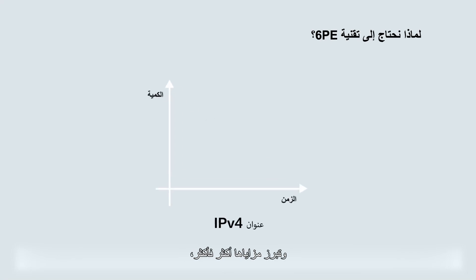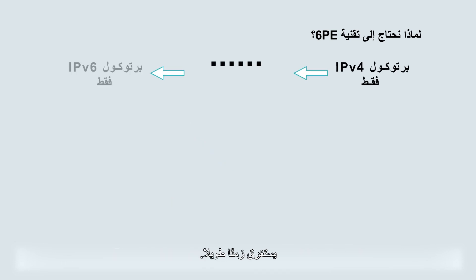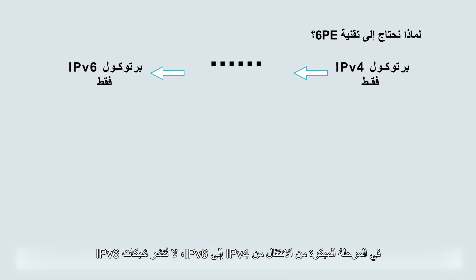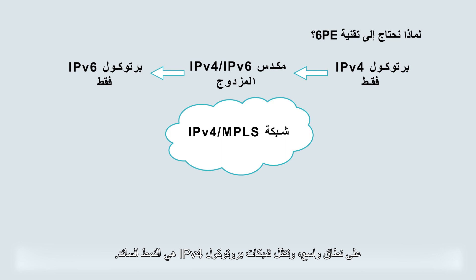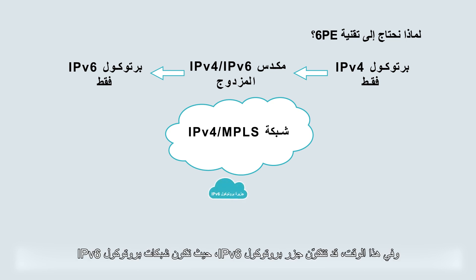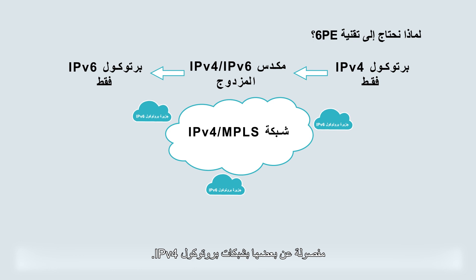Why do we need 6PE? IPv6 is continuously evolving and its advantages become increasingly prominent, especially with the depletion of IPv4 addresses. However, it takes a long time for networks to evolve from IPv4-only to IPv6-only. In the early phase of IPv4 to IPv6 transition, IPv6 networks are not widely deployed and IPv4 networks are still the mainstream. At this time, IPv6 islands — where local IPv6 networks are separated by IPv4 networks — may occur.